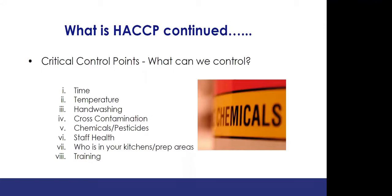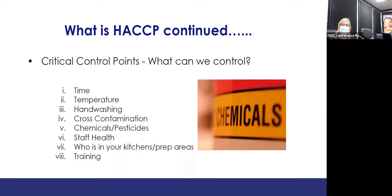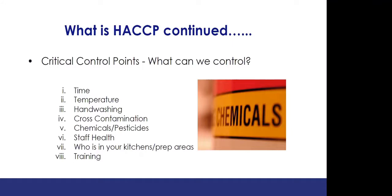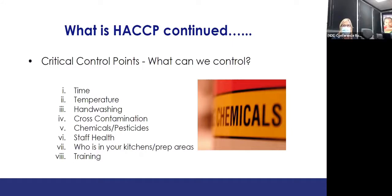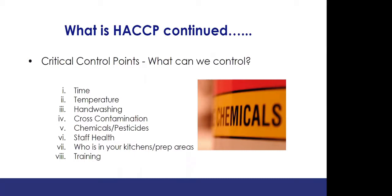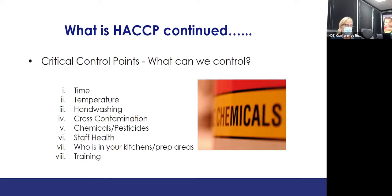What are the critical control points — what can we control? We can control time, making sure food is not in the temperature danger zone for more than four hours, quickly prepping and getting it back into refrigeration or going directly to the ovens. We cook to proper temperatures: vegetables or fruit being heated only need to reach 135°F.